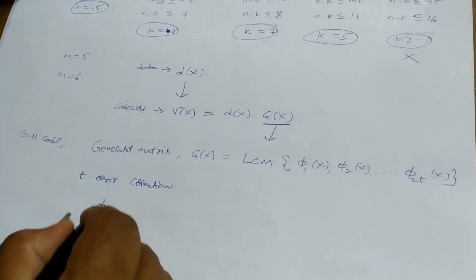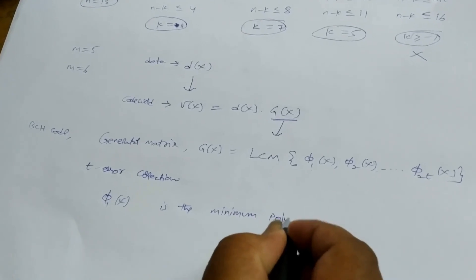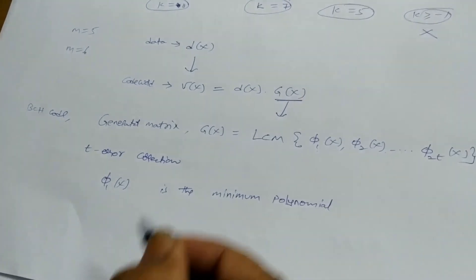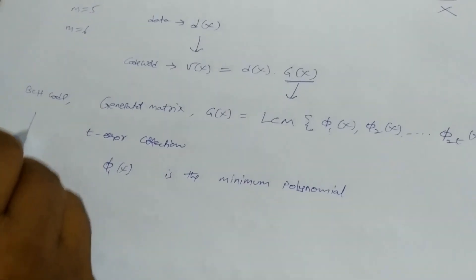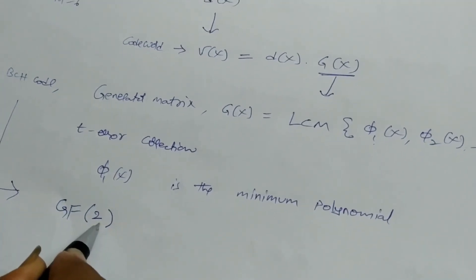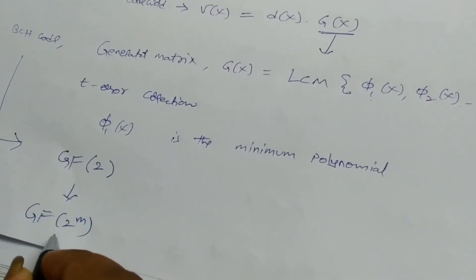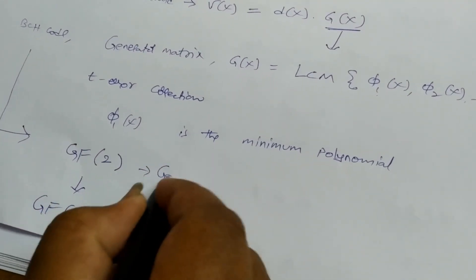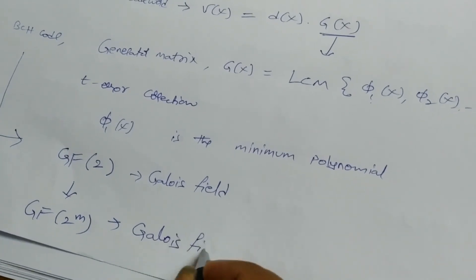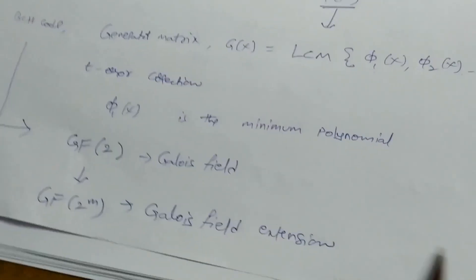Here phi_1(x), phi_2(x), up to phi_{2t}(x) represent minimum polynomials. BCH coding is based on Galois fields — specifically GF(2) and its extension GF(2^m). We will discuss what Galois fields and their extensions are, and from that we will get the idea of what minimum polynomials are, and accordingly we can find the generator polynomial.